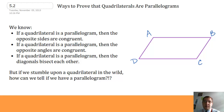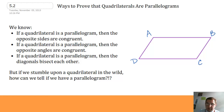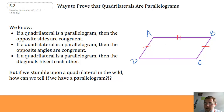This is section 5.2: Ways to Prove that Quadrilaterals are Parallelograms. We know from the previous section that if a quadrilateral is a parallelogram, then the opposite sides are congruent. So on this quadrilateral I've drawn here, if I know this is a parallelogram, then I know AD is congruent to BC, and AB is congruent to DC. The opposite sides are congruent.